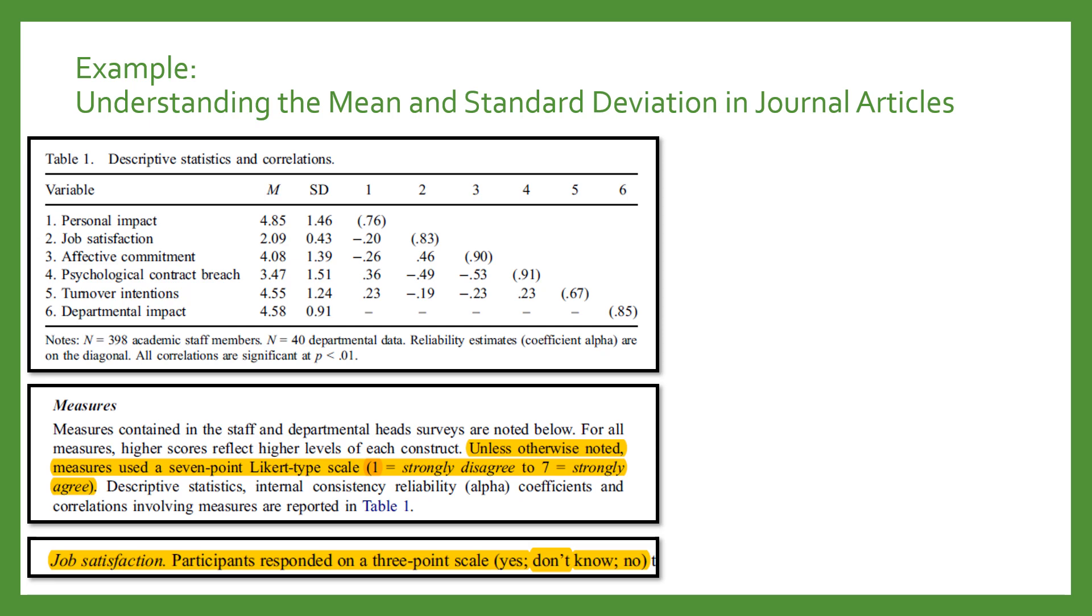Remember, even when the study is focused on correlations, the means and standard deviations are typically reported for all variables. You'll see that here in this correlation table from the journal article where you read the abstract earlier. It's really important to consider the response scale when the variables of interest are measured on a Likert scale, so you can know if the mean is relatively high or low. In this journal article, as you see written in the measure section of the results, everything was measured on a seven-point scale. But job satisfaction was measured on a three-point scale.